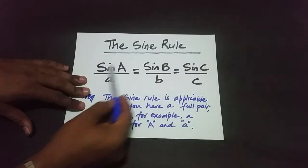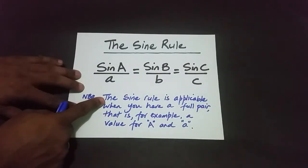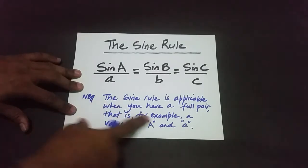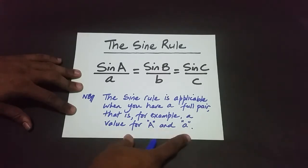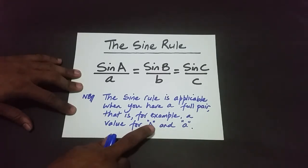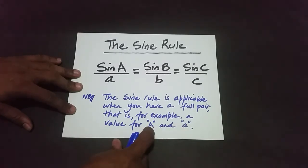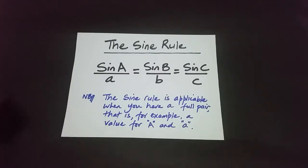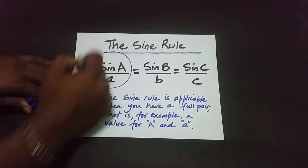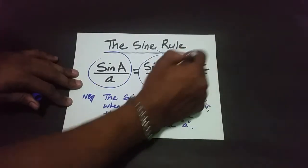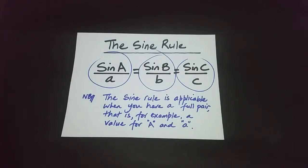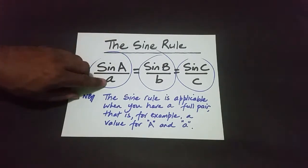The sine rule is applicable when you have a full pair — for example, a value for big A and little A. Remember, big A represents angles and little a represents the length of a side. So this would be an angle at a vertex and the opposite side to that angle. If you look carefully you'll see three pairs in the formula.